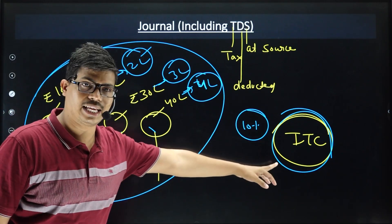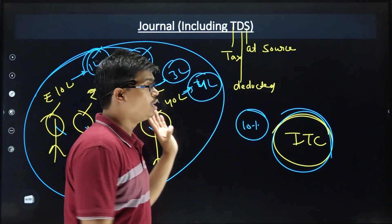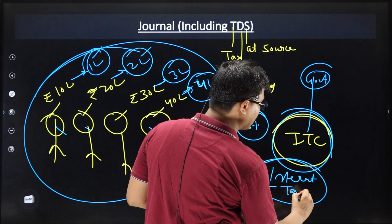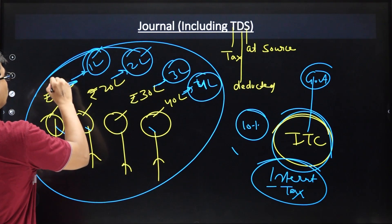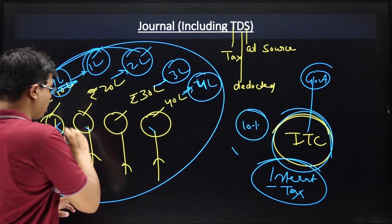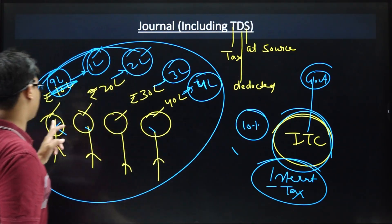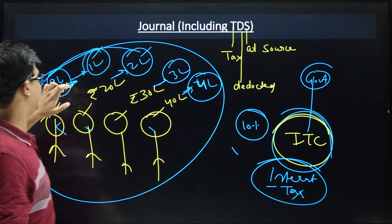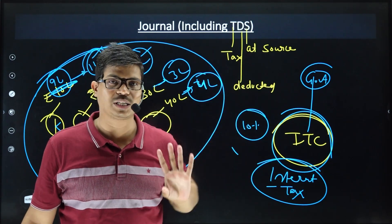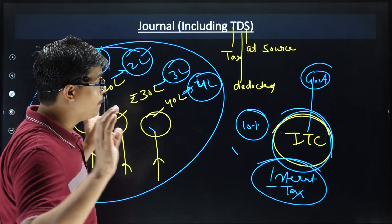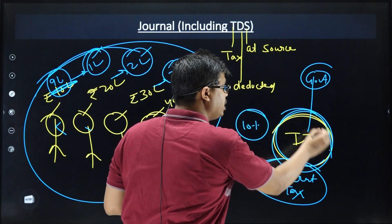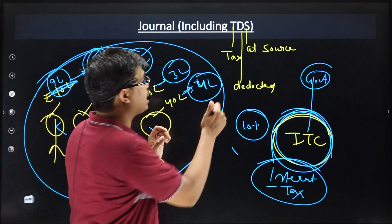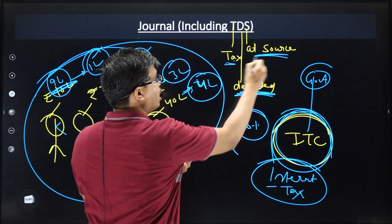So the government says to ITC: whoever you are giving interest, cut the tax from it first. Meaning, if interest is 10,00,000 rupees, don't give 10,00,000 — give only 9,00,000. The government's direction is that the company cuts the tax from the interest amount. The debenture holder can file an income tax return to claim it back if needed. The tax is cut from the source where the money is coming — that is why it is called Tax Deducted at Source.